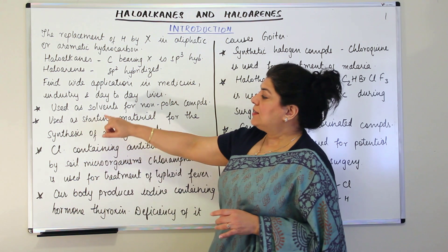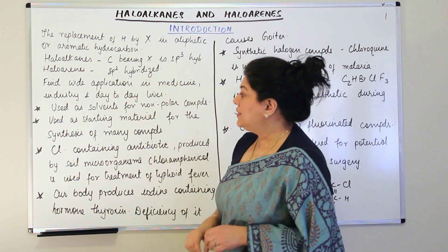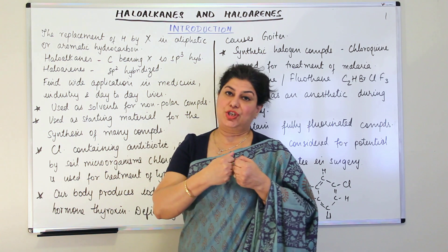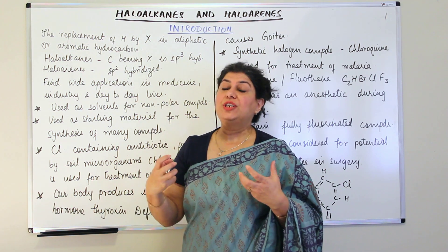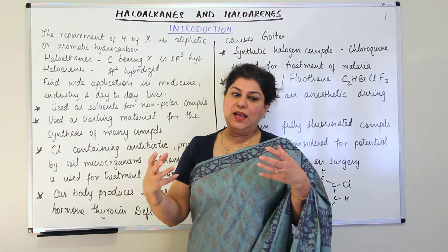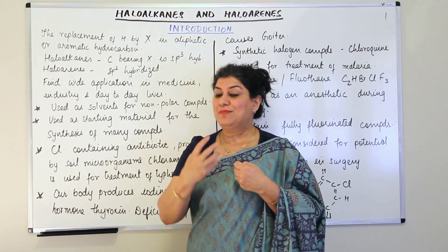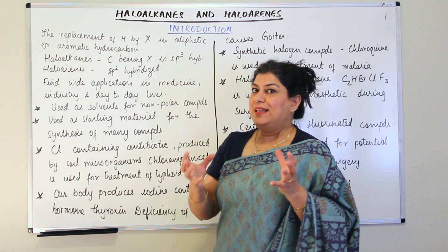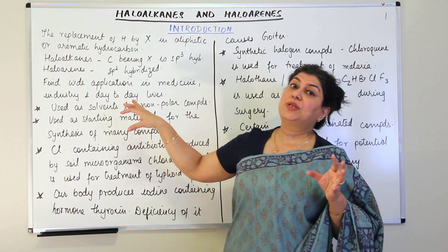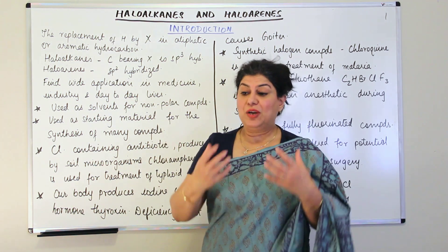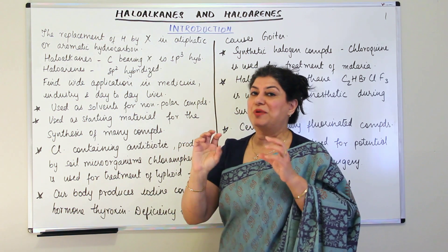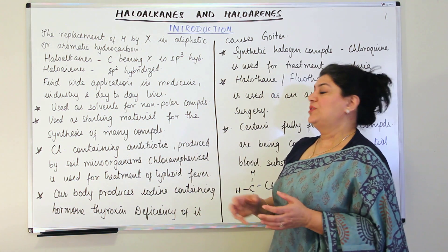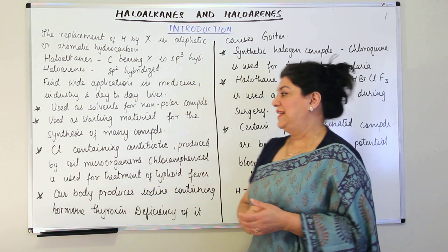The second use is that halogen-substituted hydrocarbons are used as starting materials for the synthesis of many compounds. Hydrogen attached in a covalent bond is not very reactive, but a halogen atom is far more electronegative. When it attaches to a hydrocarbon, it becomes a reactive centre — a site where reactions can take place. Therefore these compounds are used as starting materials because that halogen can be substituted easily.